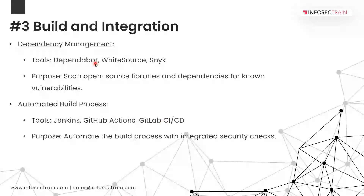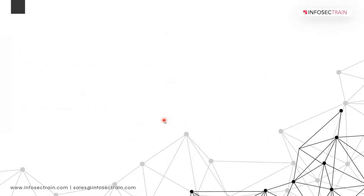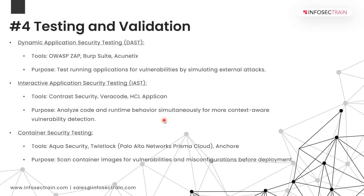In the dependency management stage, we scan open source libraries and dependencies. Then there is the automated build process, where you write the pipeline. Tools used for the automated build pipeline include Jenkins, GitHub Actions, and GitLab CI/CD.